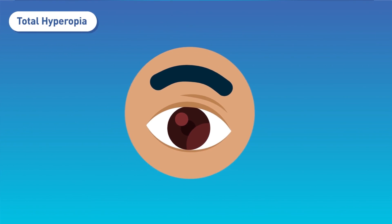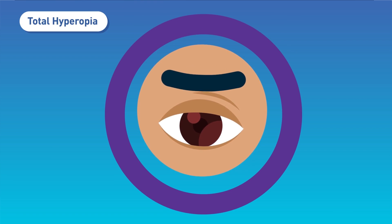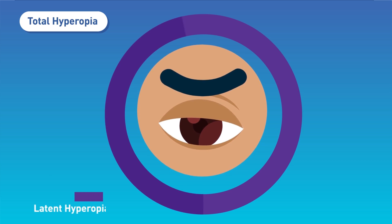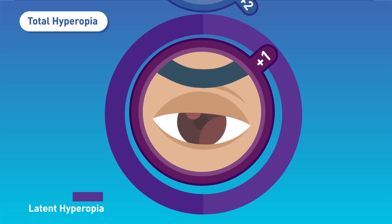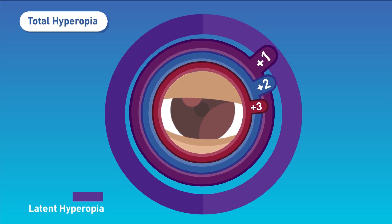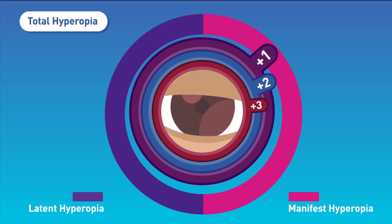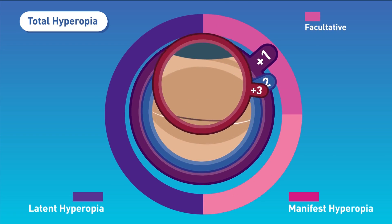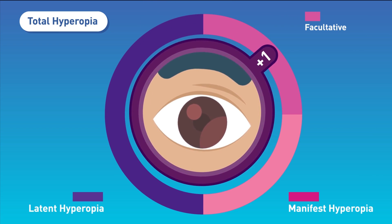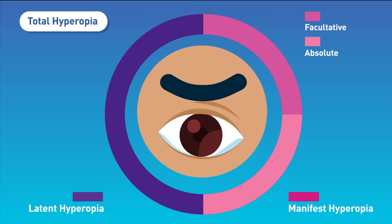Types of hyperopia: 1. Total hyperopia — the total refractive error calculated after complete cycloplegia (intraocular muscle paralysis) induced by certain drops. 2. Latent hyperopia — the amount of hyperopia corrected by the focusing power produced due to normal tone of intraocular ciliary muscles; usually one diopter. 3. Manifest hyperopia — the remaining portion, divided into: 4. Facultative — the amount corrected by active contraction of ciliary muscles; and 5. Absolute — the amount that cannot be corrected even by contraction of ciliary muscles.